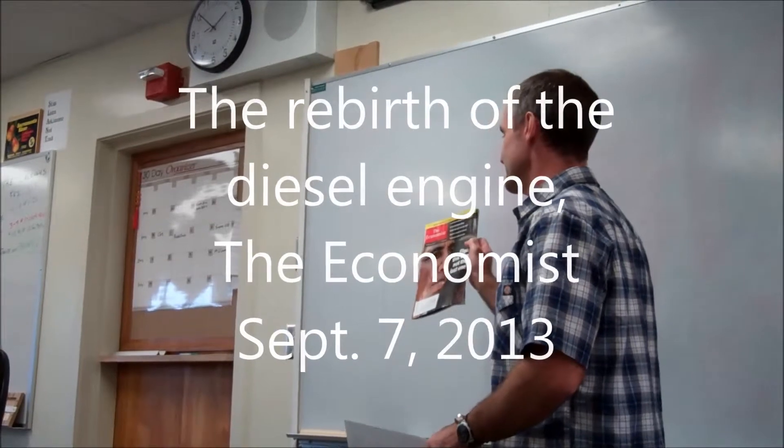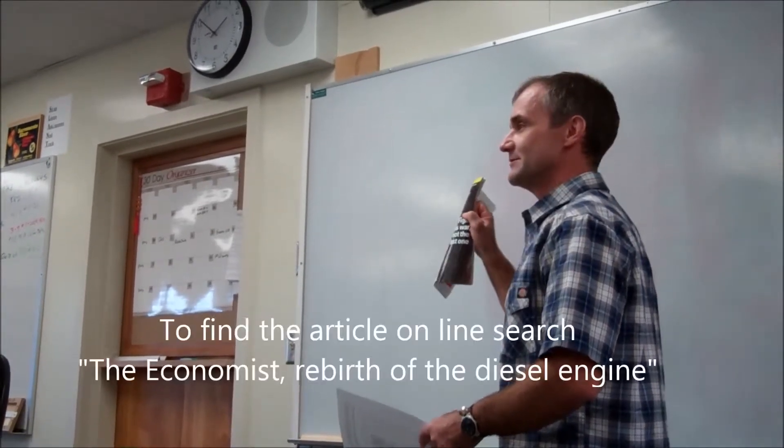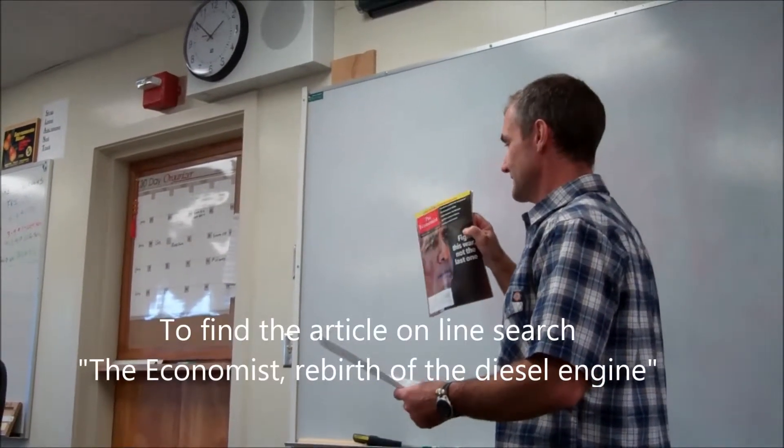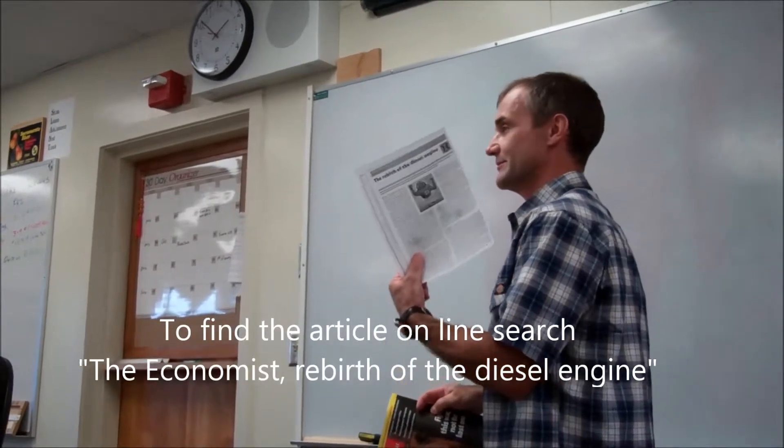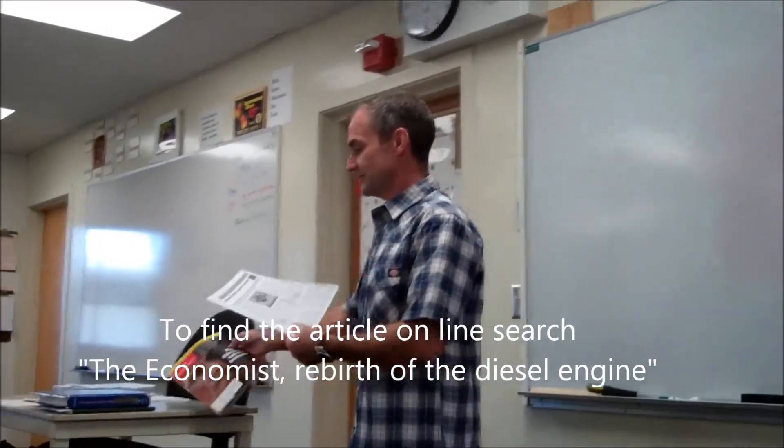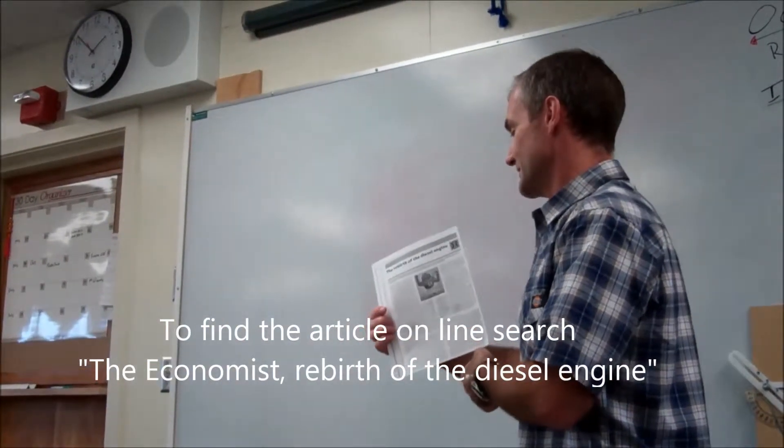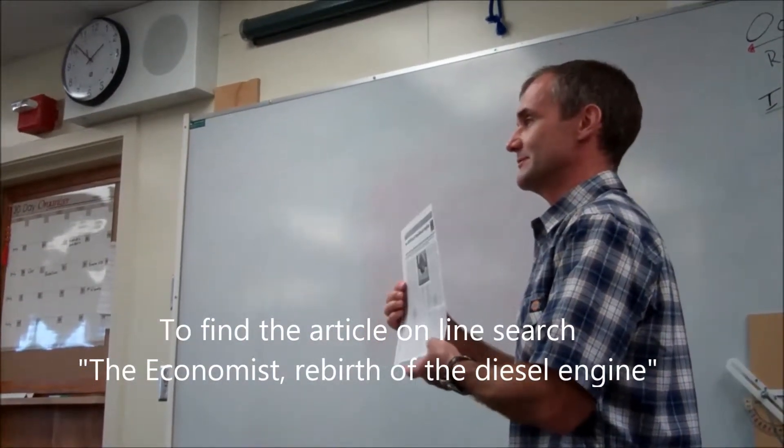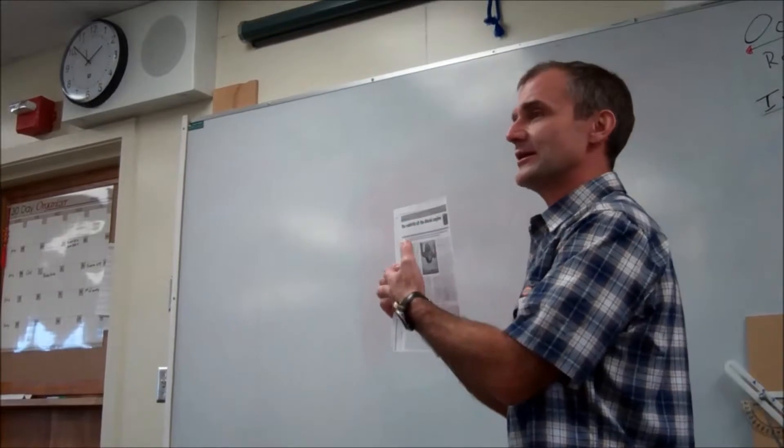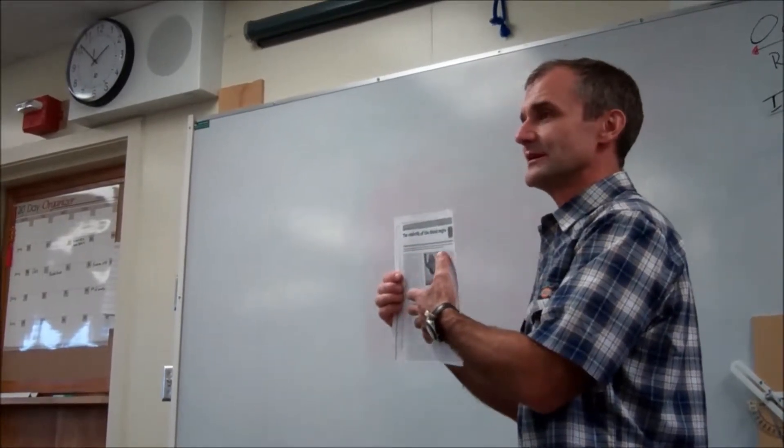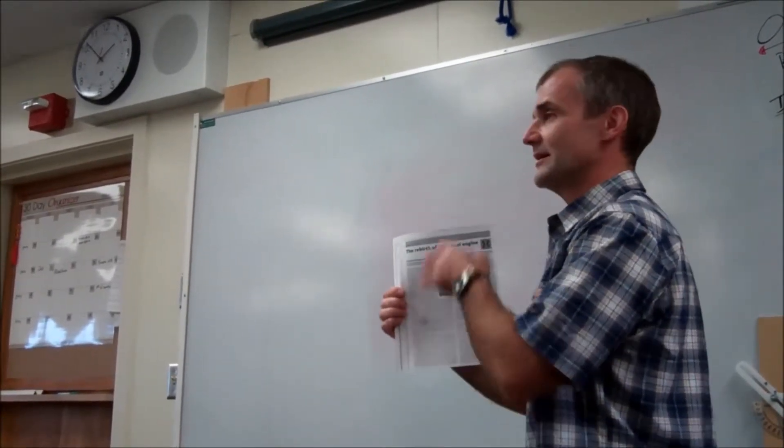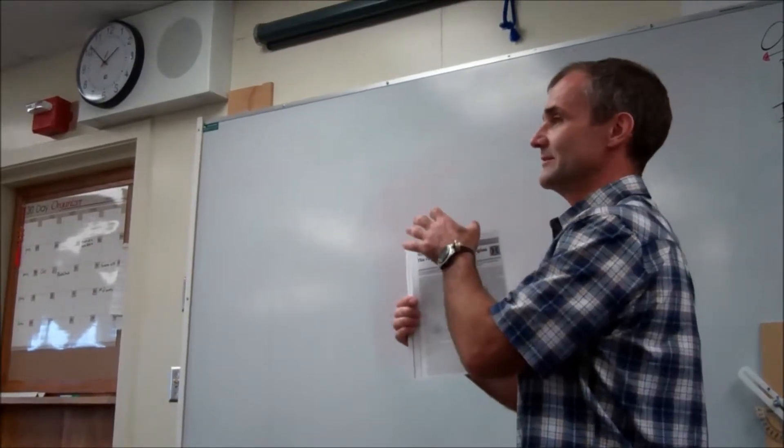Okay, if you would, go ahead and read the article in the September 2013 Economist, The Rebirth of the Diesel Engine. You want to read through it first, get an overview, and then after you read through it, you want to go through and find two variables and how they relate. You want to write a paragraph explaining those variables, and then you want to draw a graph explaining or reiterating what you said in your paragraph.